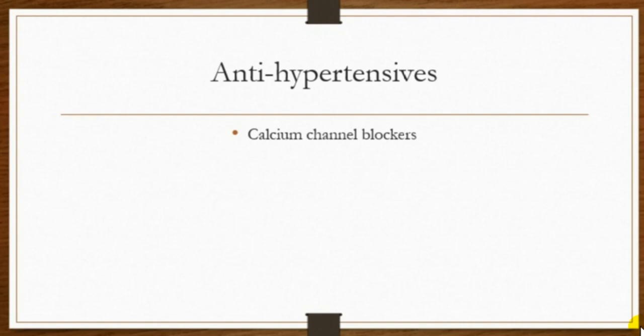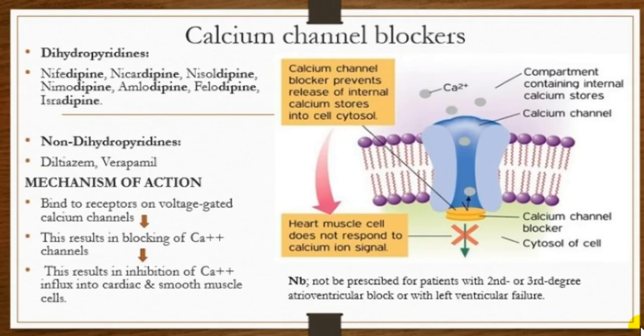Welcome to today's tutorial on antihypertensives, specifically calcium channel blockers. We have two main groups: the dihydropyridines and the non-dihydropyridines. All dihydropyridines end with '-dipine,' such as nifedipine, nicardipine, and felodipine. The non-dihydropyridines include diltiazem and verapamil.